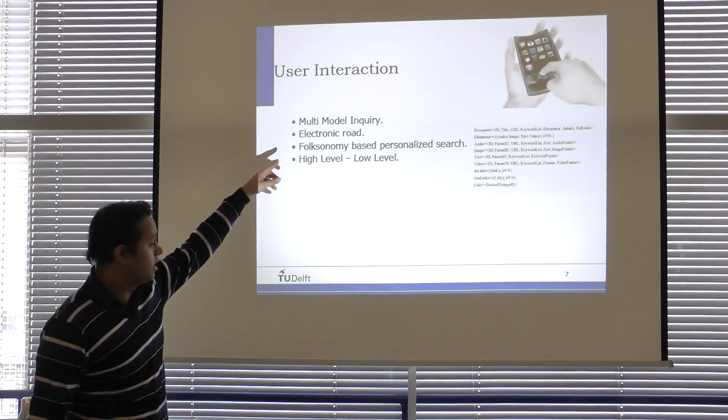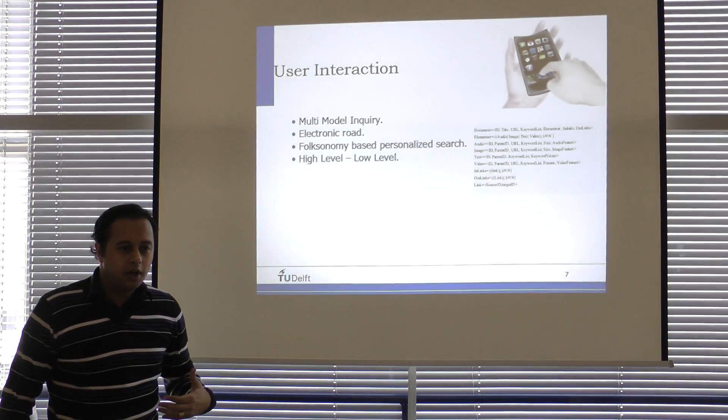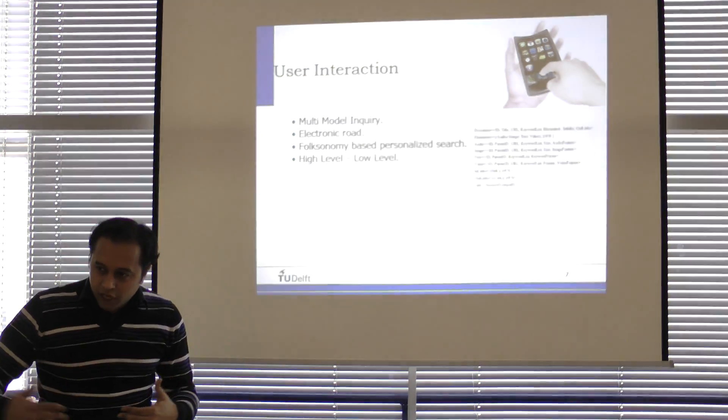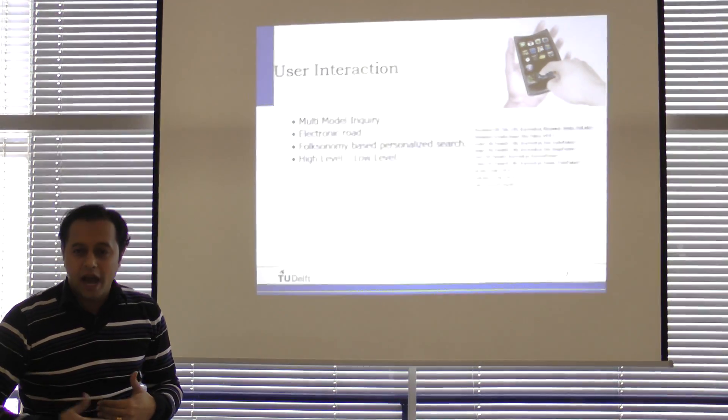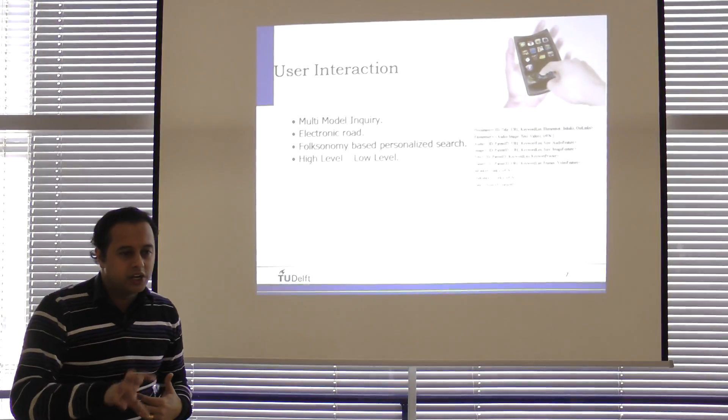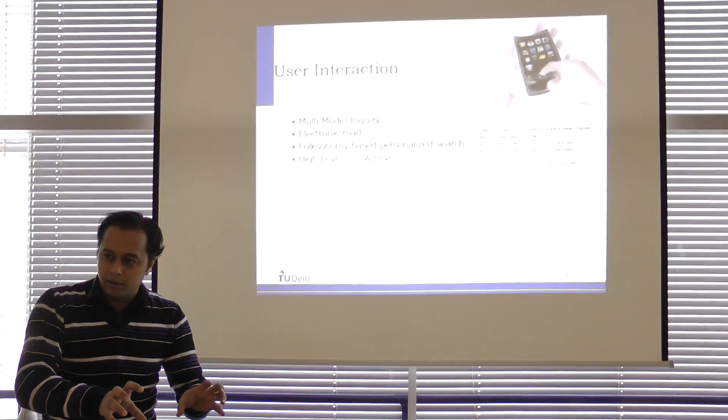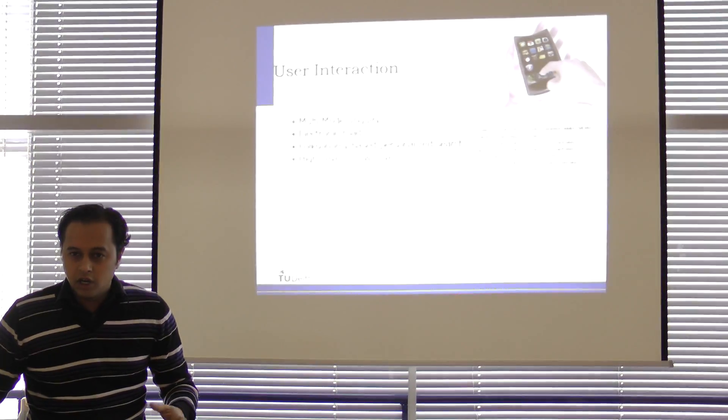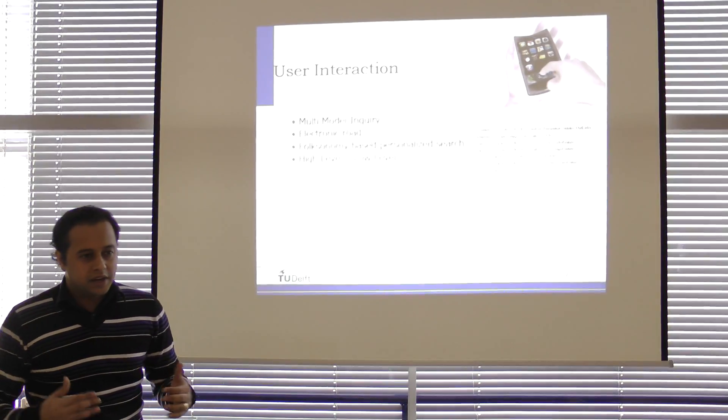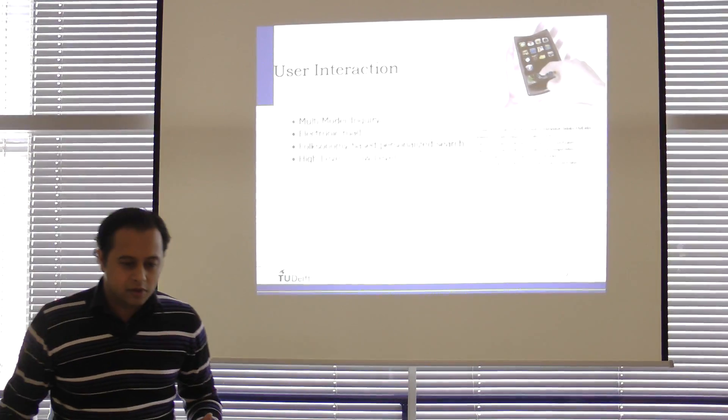The second interesting part is electronic road. So this is one concept used by a paper in which the system, at every step, till you reach a final, till you're happy, till you're satisfied, it gives you recommendations. So you find something, you search for something, then it gives you five recommendations. So you choose one recommendation, then you go next, then you go next step. So it creates an electronic road, and then it's with the user all the time. That's one approach.